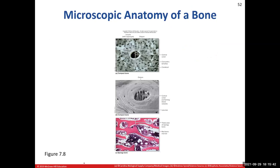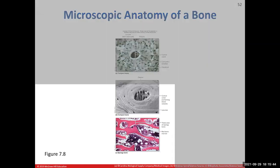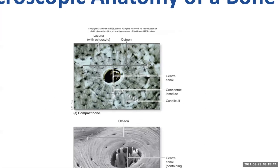Looking at our light microscope image, here's the central canal where blood vessels and nerves are located. You can see the rings going around it — those dark spots are the lacunae containing osteocytes. The black lines projecting from lacuna to lacuna are the canaliculi, showing how these cells help each other out.